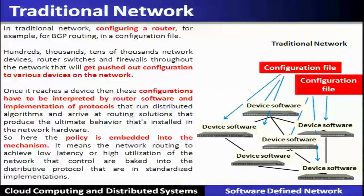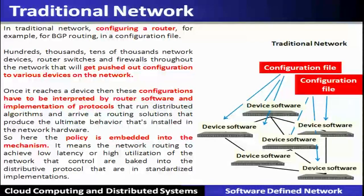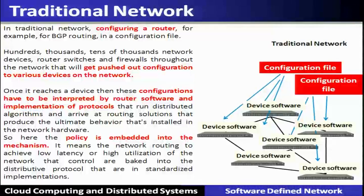Let us see this difficulty in a scenario. In the traditional network, you can see the configuration of a router. For example, if routers are configured for external routing — that is BGP routing — done in configuration files, these configured files are pushed out to various devices and switches. Once they reach these devices, the router software and its protocol run a distributed algorithm based on that configuration to arrive at routing solutions that produce the ultimate behavior installed in the network hardware.